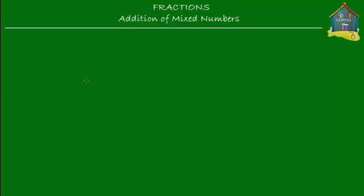Welcome to homecampus.com.sg. In this lesson we'll see how to add mixed numbers. Let me take two mixed numbers: one and two-thirds, and two and a half, and add them together.